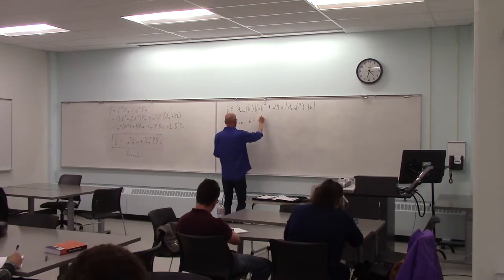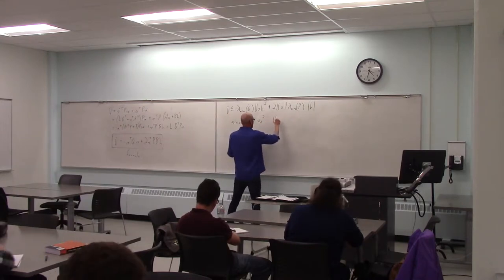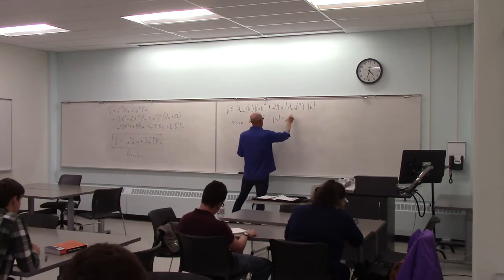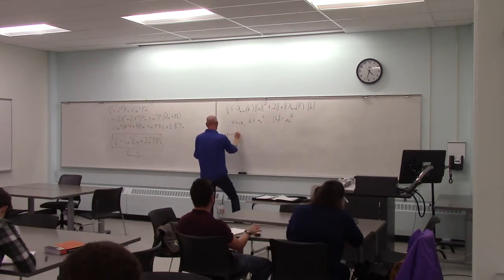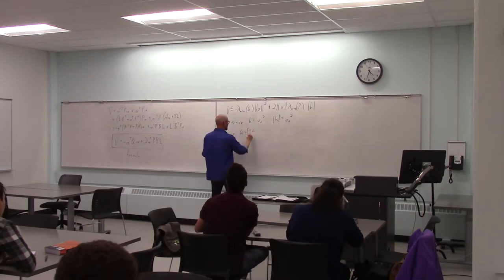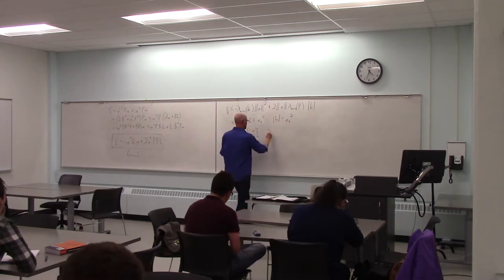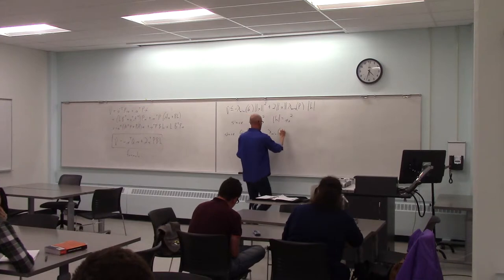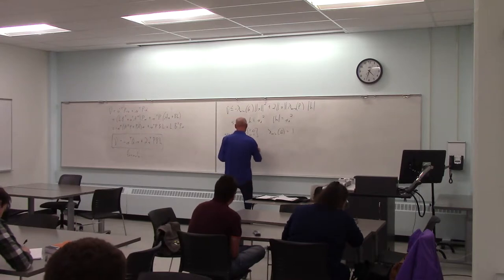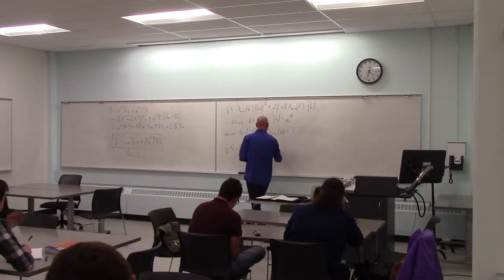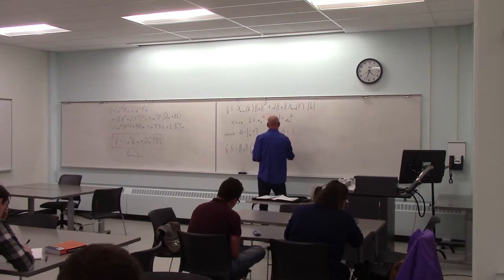So h in this case is x2 squared. The magnitude of h is x2 squared. Since q is just the identity matrix, the minimum eigenvalue of q is equal to 1. So I really have v dot less than or equal to minus the norm of x times the norm of x minus 2, maximum eigenvalue of p times x2 squared.